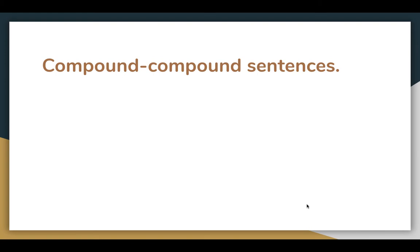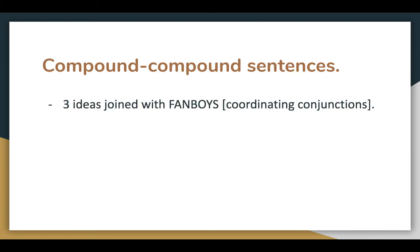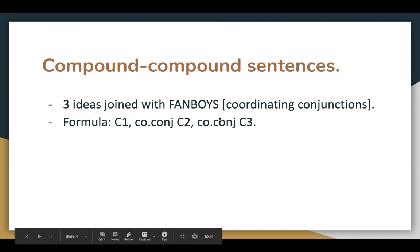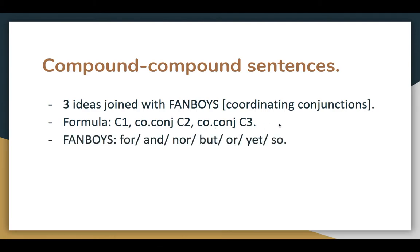Last but not least: compound-compound sentences. Here we're joining three ideas using coordinating conjunctions — the FANBOYS family. The formula is: C1, coordinating conjunction, C2, coordinating conjunction, C3. It's like a compound sentence but with one more clause attached using another coordinating conjunction as your linking element. Just a reminder: the FANBOYS family consists of for, and, nor, but, or, yet, so.